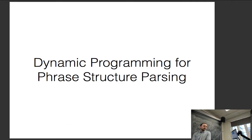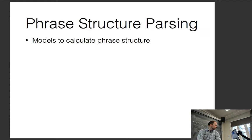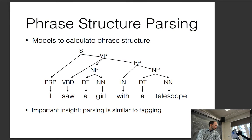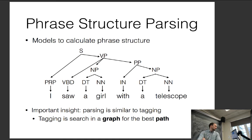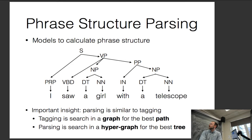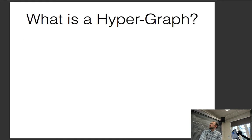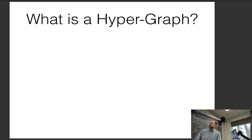Moving to methods for phrase structure parsing: the important insight is that phrase structure parsing is similar to tagging. While tagging is search in a graph for the best path, parsing is search in a hypergraph for the best tree. The CKY algorithm is a limited version of this. Hypergraphs are very flexible and elegant ways to describe various things we might want to do with graphs.